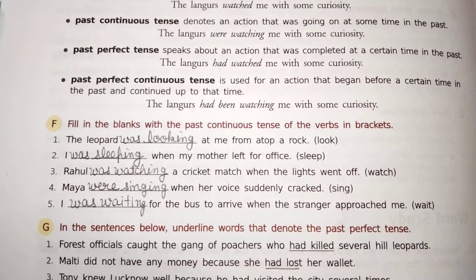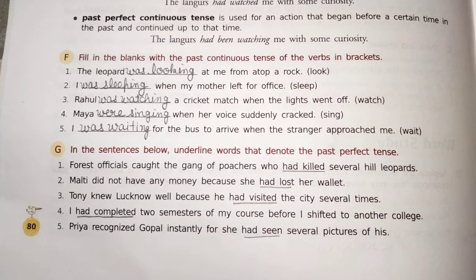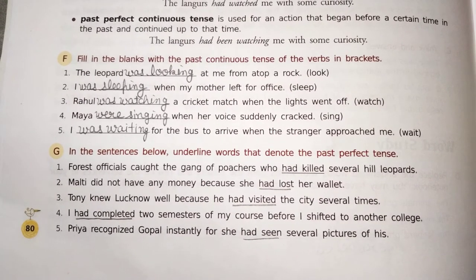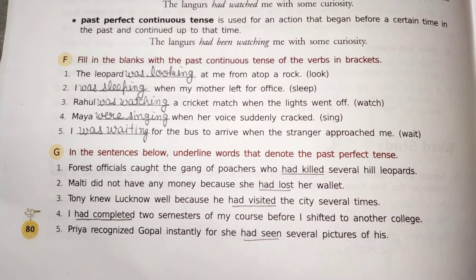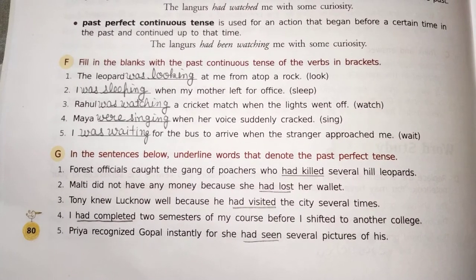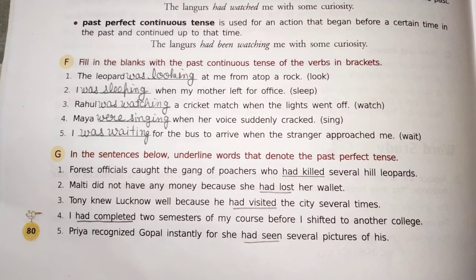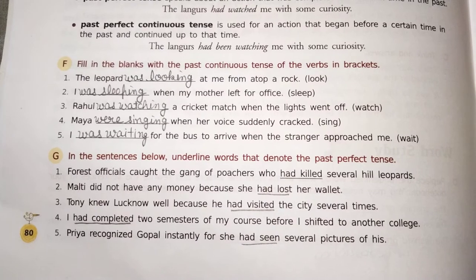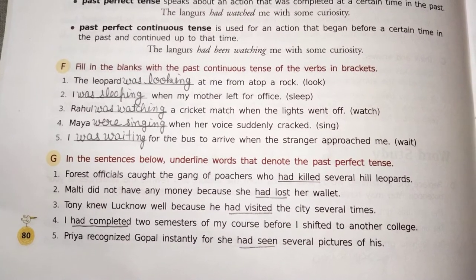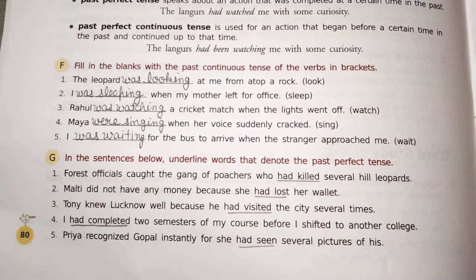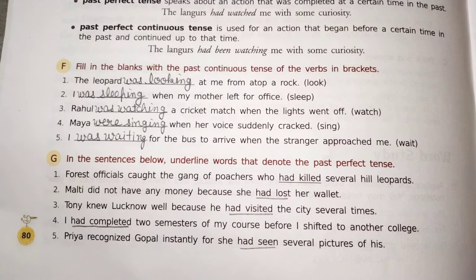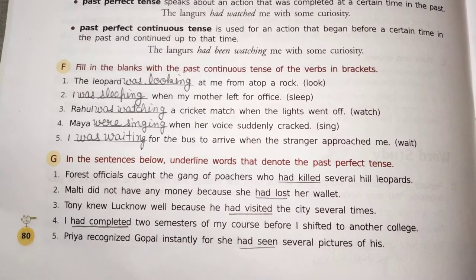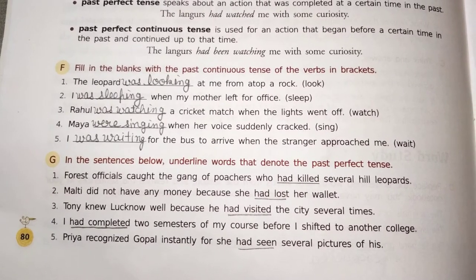Next is Exercise G part. We have to underline the past perfect tense sentences. First: had killed. Second: had lost. Third: had visited. Fourth: had completed. Fifth: had seen.